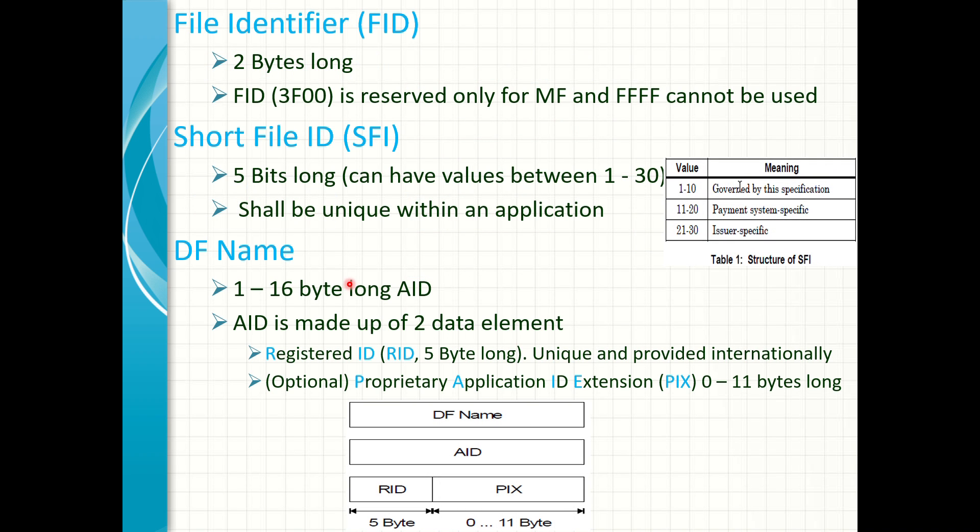A file ID is used to encode the master file. It is two bytes long and per default always 3F00. FFFF is also reserved for future use and cannot be used. There are also other FIDs which are reserved by ISO and other norms.